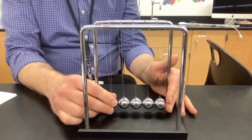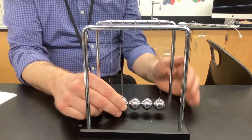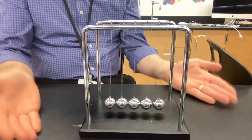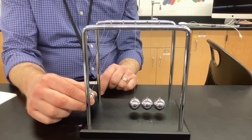But here's my question. If I take one, I always get one that goes back and forth. If I take two, I always get two that goes back and forth. Momentum would still be conserved if I took two back.